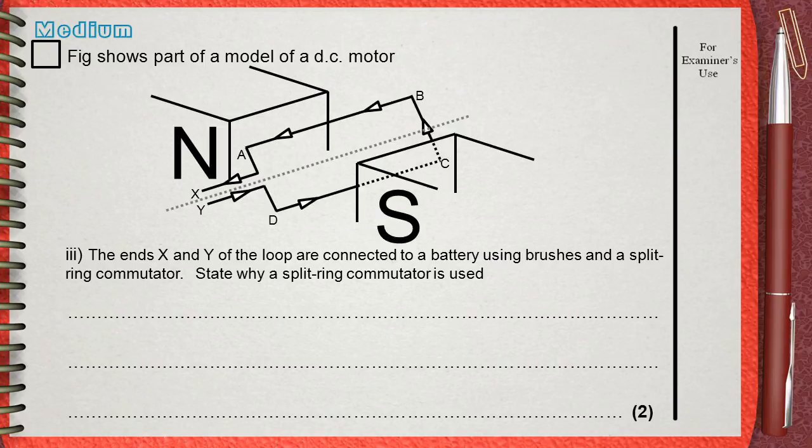Triple I, the ends X and Y of the loop are connected to a battery using brushes and a split-ring commutator. State why a split-ring commutator is used.